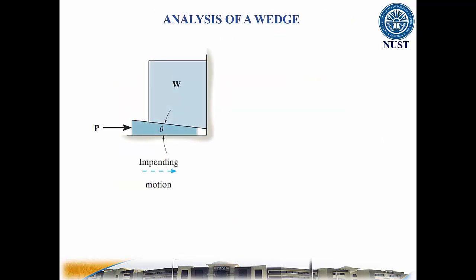A wedge is a simple machine in which a small force P is used to lift a large weight W. To determine the force required to push the wedge in or out, it is necessary to draw a free body diagram of the wedge and the object on top of it.